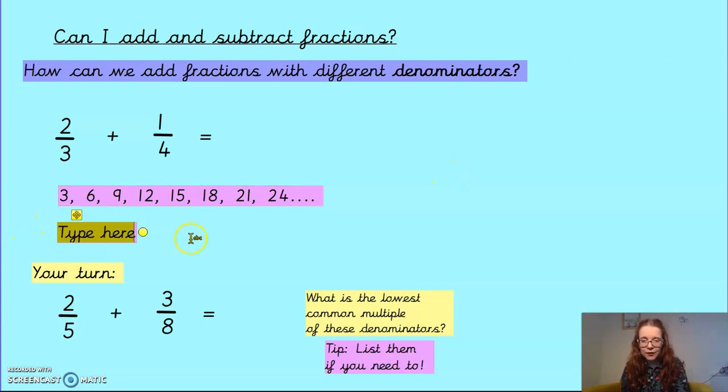And I'm going to come down here and I'm going to do exactly the same with my fours. Let's see, I'm going to start on four, eight, 12. And I'm not going to go any further because I've already spotted a common multiple. So both three and four have the common lowest multiple of 12.